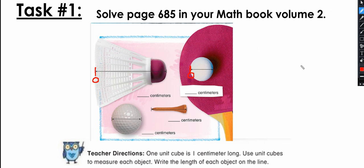All right, that was fun! Let's check together. I placed my ruler with the zero at the beginning of the first object, and the number I saw was 10 — so that object measures 10 centimeters. For the next object, I placed the zero at the beginning and measured — it is three centimeters.